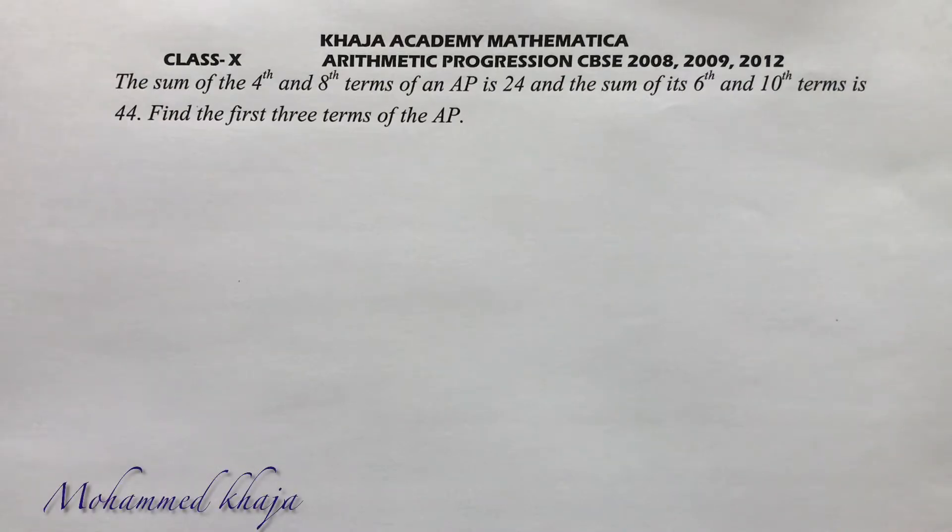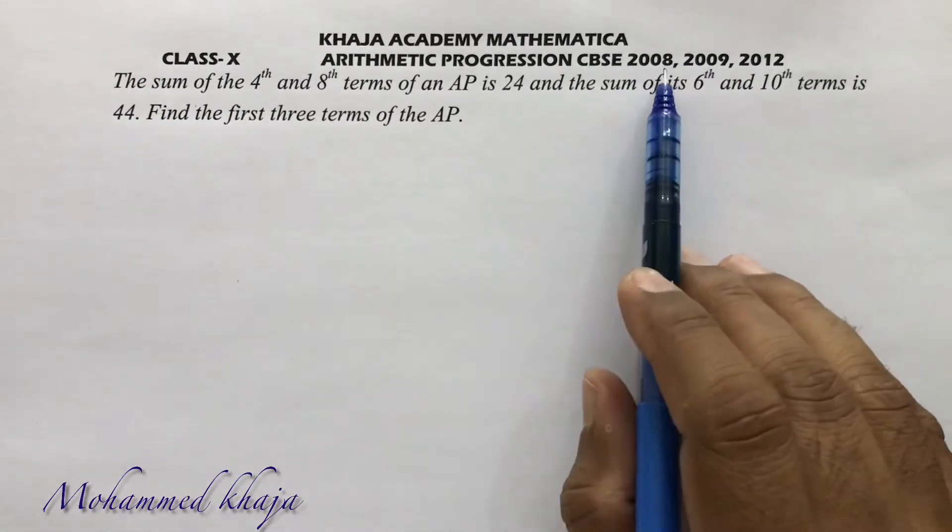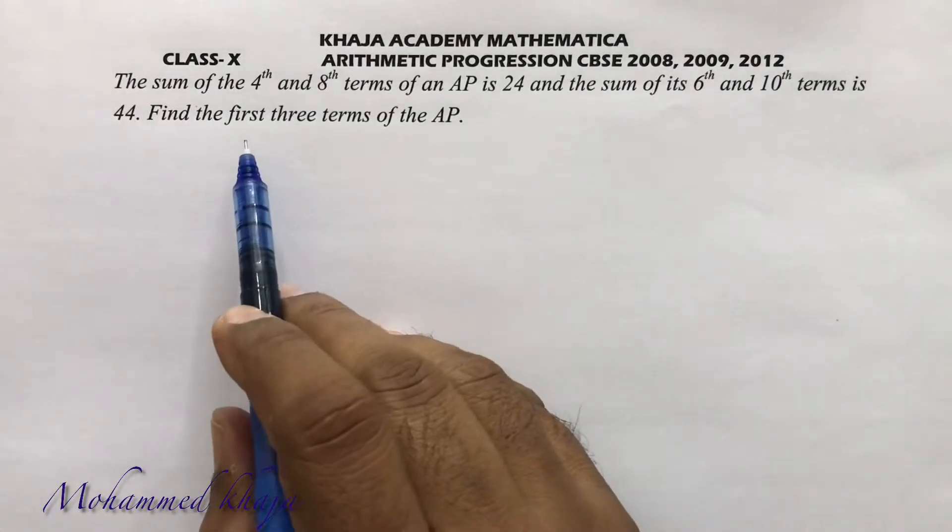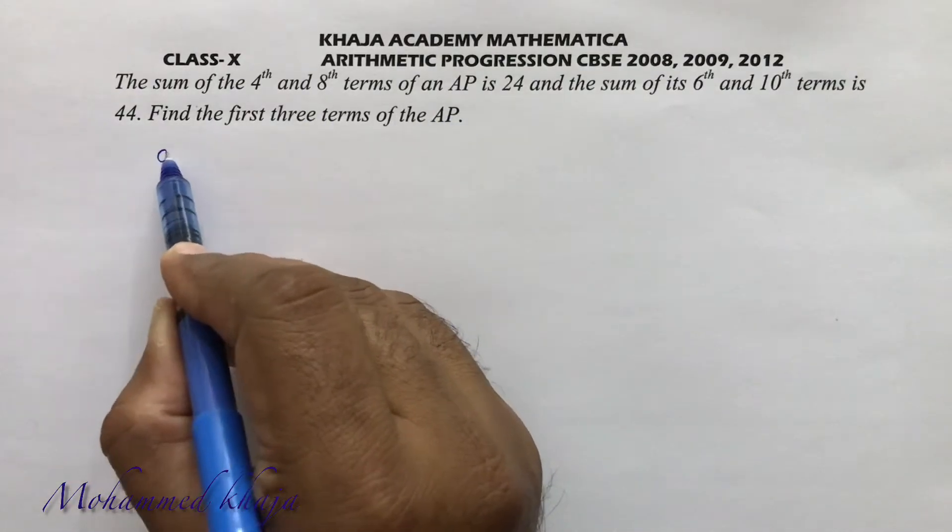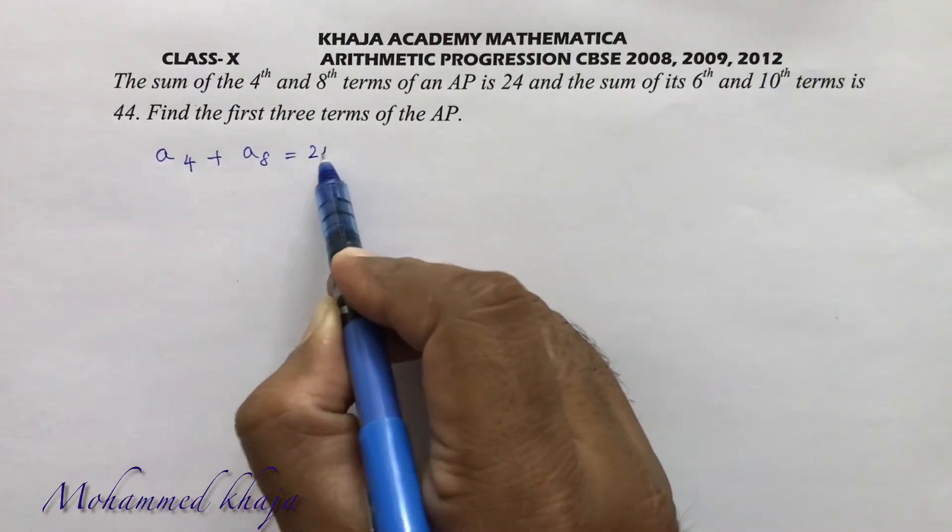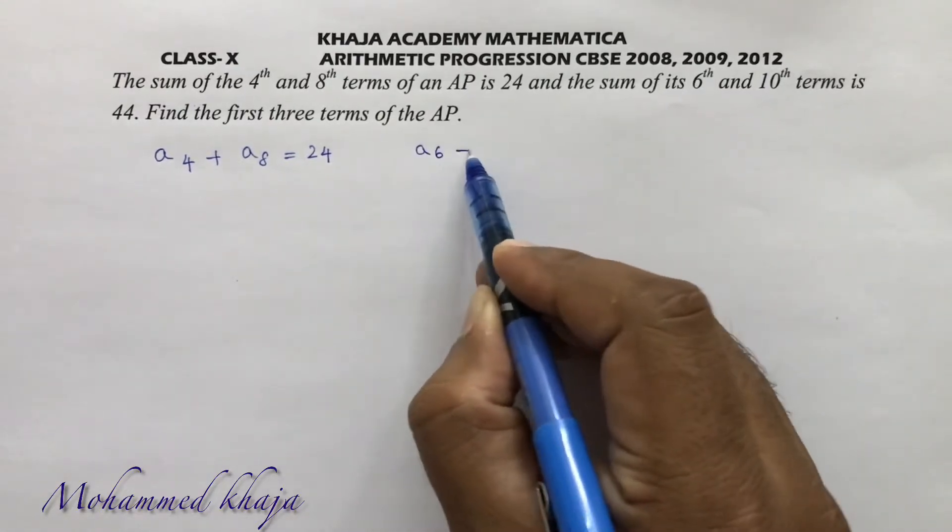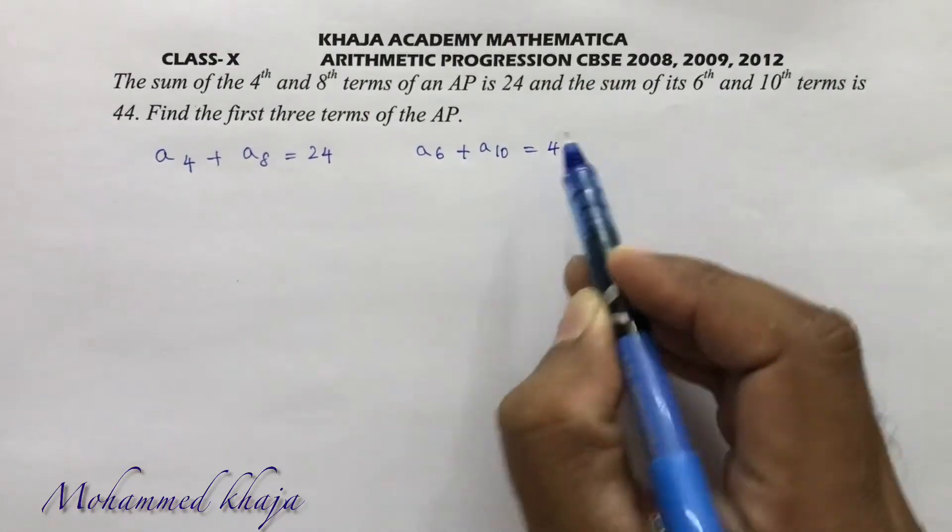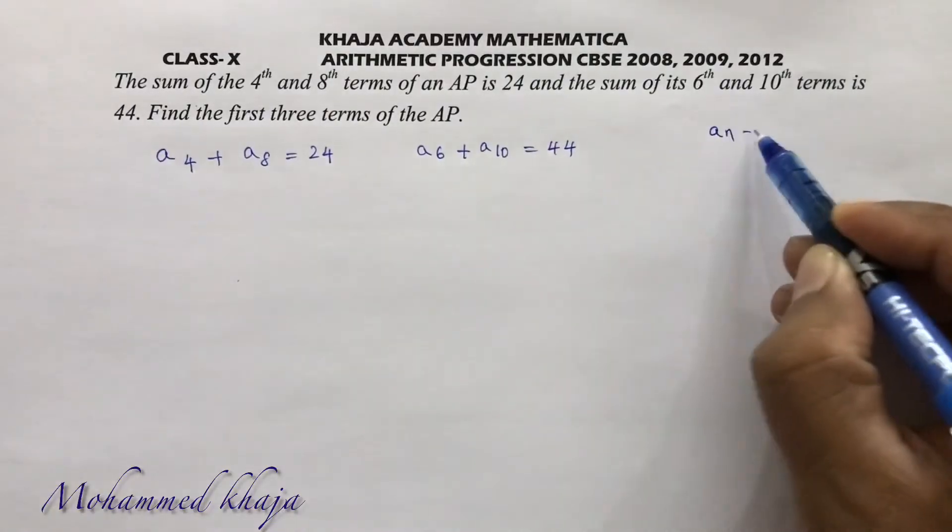One more important problem from arithmetic progression. This question they ask in CBSE board exams in 2008, 2009, and 2012. The sum of the fourth and eighth terms of an AP is 24, and the sum of its sixth and tenth terms is 44. Find the first three terms of the AP. The nth term of an AP formula is a + (n-1)d.